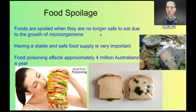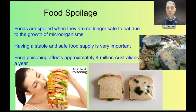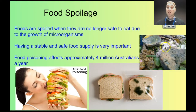Foods are spoiled when they're no longer safe to eat — we normally say food has gone off. That's due to the growth of microorganisms. Over here I've got a picture of some bread with mould growing on it, which is a fungal microorganism. The other foods in the background are being affected by mould and also bacteria. These are decomposers — they're breaking down the food to get their energy so that they can reproduce.